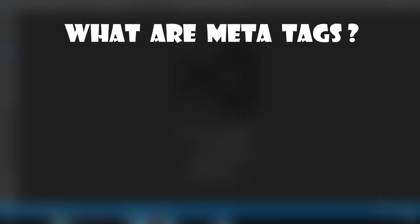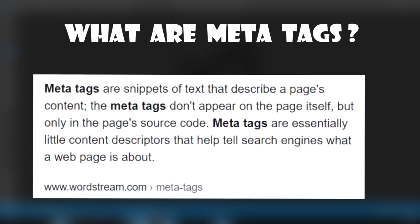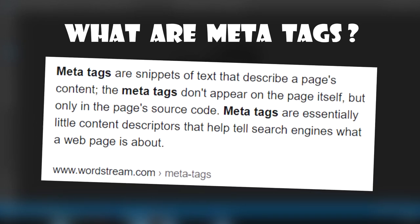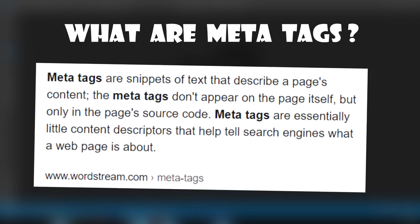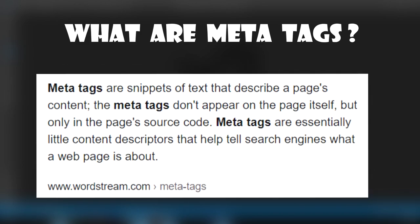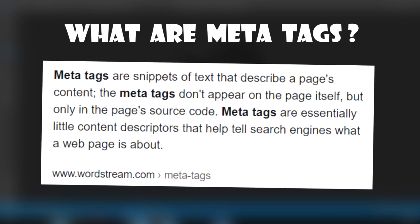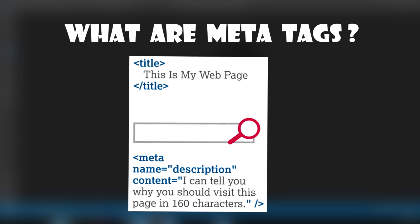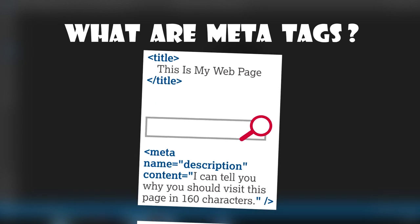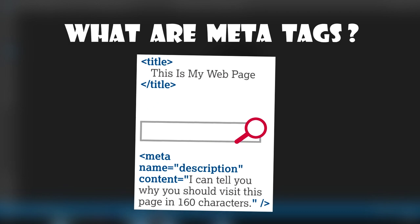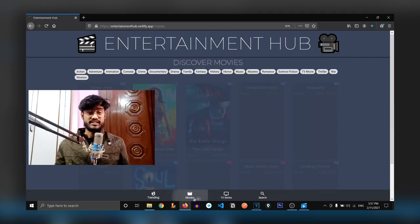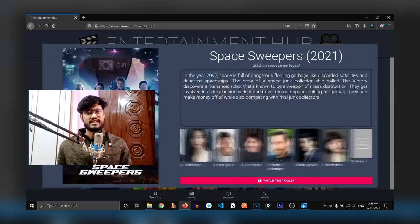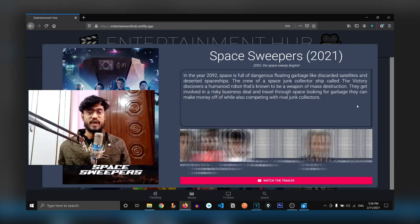What are meta tags? According to wordstream.com, meta tags are snippets of text that describe a page's content. They don't appear on the page itself, but only in the page's source code. Meta tags are essentially little content descriptors that help tell search engines what a page is about. We're going to make our movie app SEO friendly by using React Helmet.